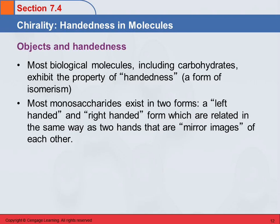Most biological molecules, including the carbohydrates, exhibit a property called handedness, and this is a form of isomerism. We say that monosaccharides exist in two forms: a left-handed version and a right-handed version. And these are related to each other in the same way that your two hands are related.